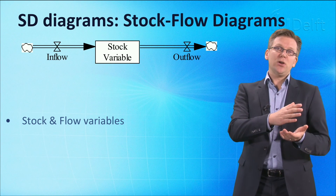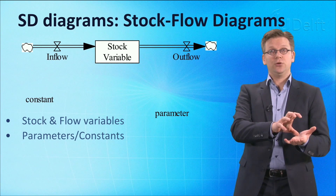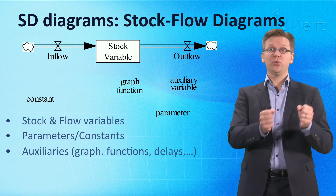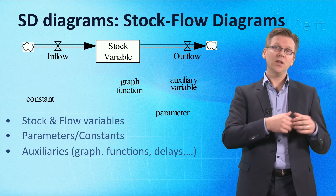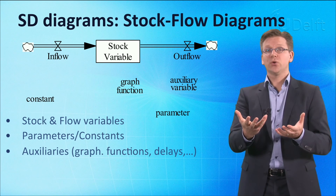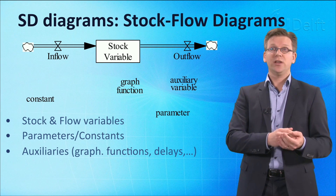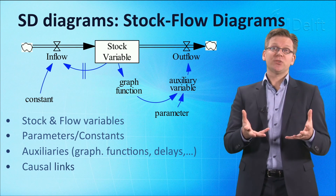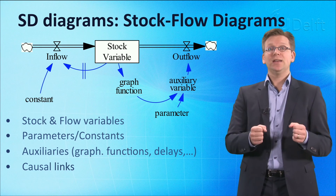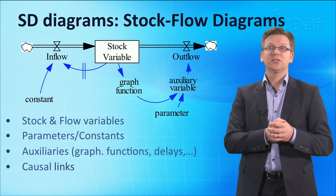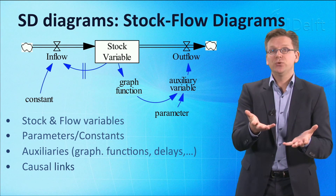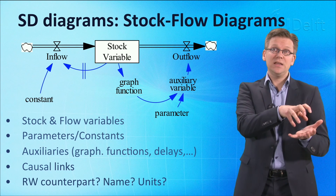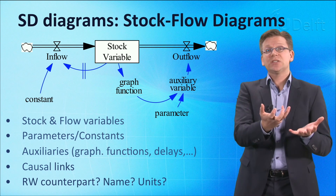Apart from stocks and flows, constants and parameters are also included in these models. Auxiliary variables are included to build models that closely correspond to the real-world system. Auxiliary and flow variables often contain very specific functions, such as non-linear graphical functions or delay functions. Direct causal relationships between these variables are indicated with blue causal links. Note that the flows are causal links too, and also note that variables need to have a real-world meaning correspondence, and that all units need to be consistent.